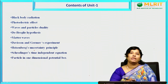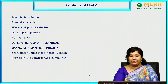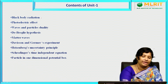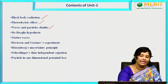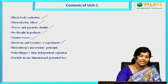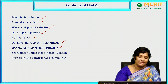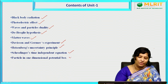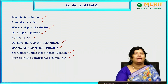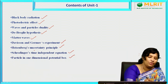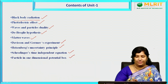The contents of Unit 1 — Quantum Physics — are: blackbody radiation, photoelectric effect, wave-particle duality, de Broglie hypothesis and matter waves, Davisson and Germer's experiment, Heisenberg uncertainty principle, Schrödinger's time-independent equation, and particle in a one-dimensional potential box. Today let us discuss about blackbody radiation.